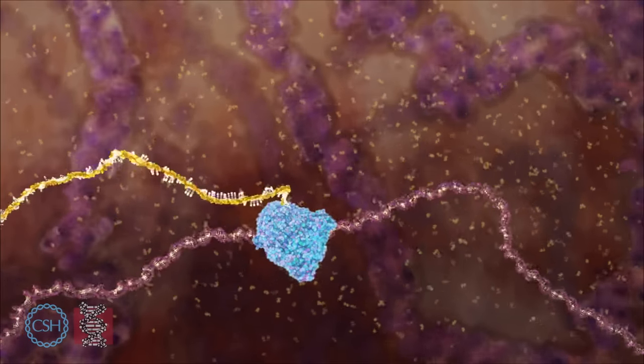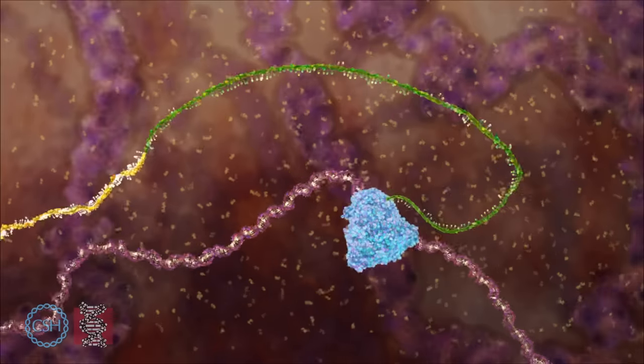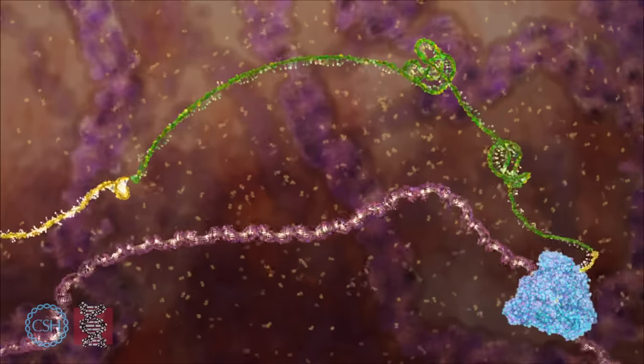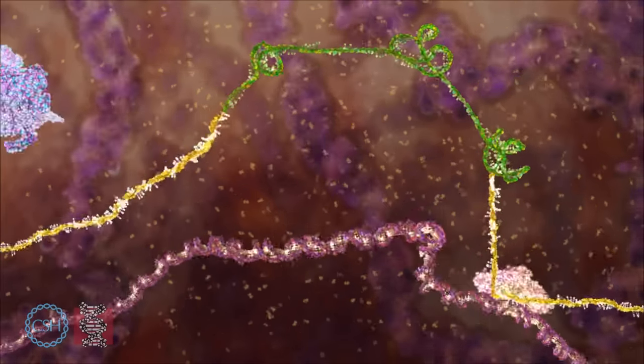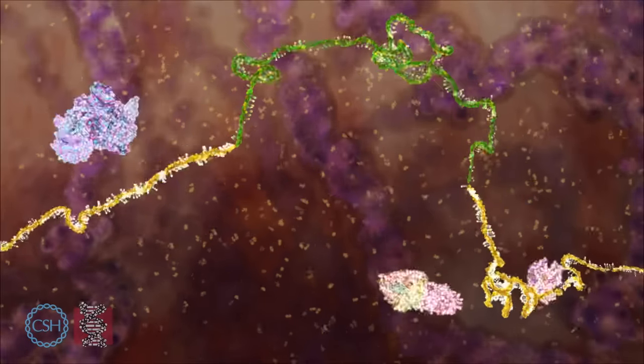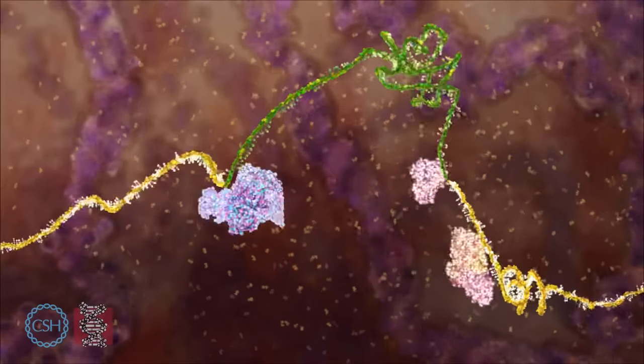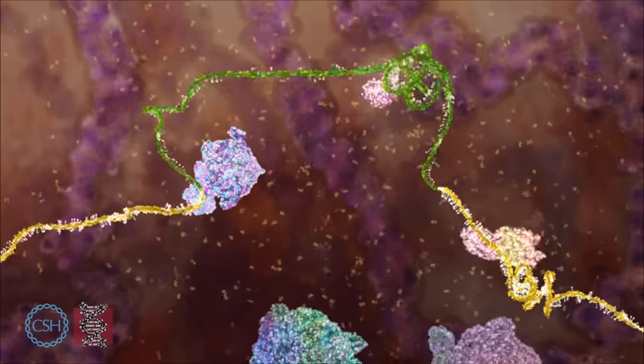At this point, the RNA needs to be edited before it can be translated into a protein. This editing process is called splicing, which involves removing the green, non-coding regions called introns leaving only the yellow protein-coding exons.